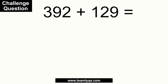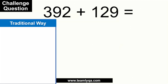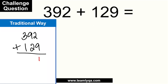Our problem is 392 plus 129. Let's use all three methods. For the traditional way, rewrite the numbers vertically: 392 plus 129. Solve right to left: 2 plus 9 is 11, write 1 carry 1; 1 plus 9 plus 2 is 12, write 2 carry 1; 1 plus 3 plus 1 is 5. The answer using the traditional method is 521.